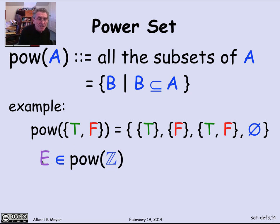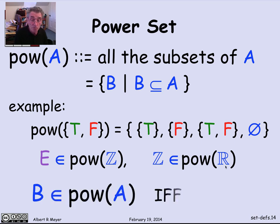The even numbers E that we just defined on the previous slide is a member of the power set of Z because it's a subset of integers. Even integers are a special case of integers. And the integers are a member of the power set of R. This is just a synonym for saying that integers are a subset of reals. Every integer is a real.